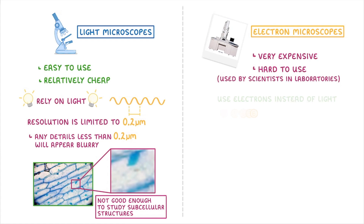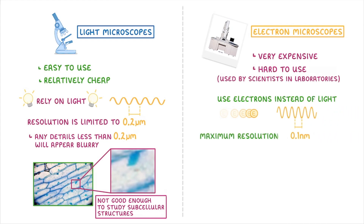Their benefit, though, is that they use electrons instead of light. And electrons have a wavelength of just 0.1 nanometers, and so their maximum resolution is also 0.1 nanometers. And remember, with resolution, a smaller value is better, because it means that you can see tinier details.